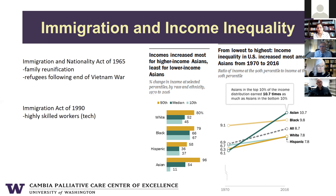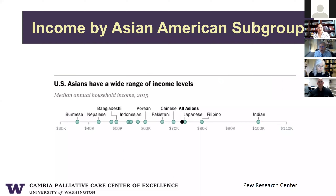Asians in the top 10% of the income distribution earn 10 times as much as Asians in the bottom 10%. Looking at different subgroups, you can see big differences — from Indian American households with a median income of $100,000 to Burmese households at under $40,000. This income inequality is a key feature as we think about Asian Americans.